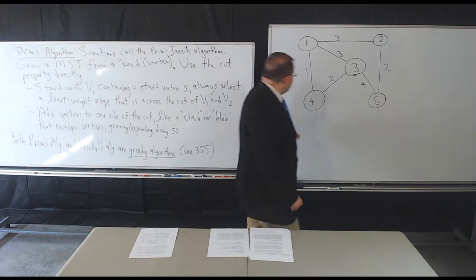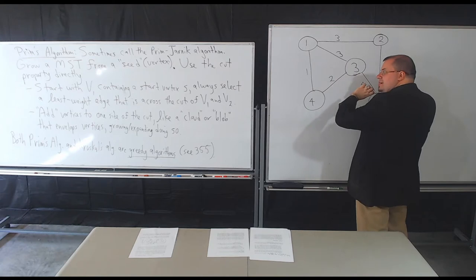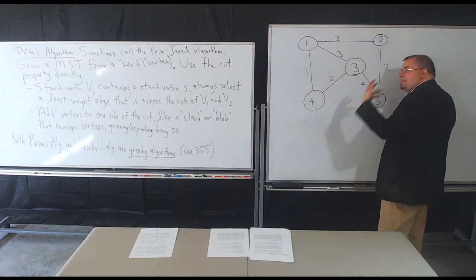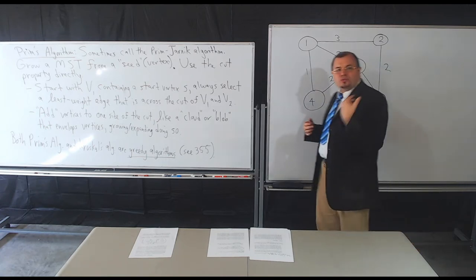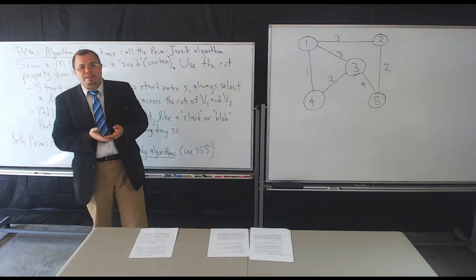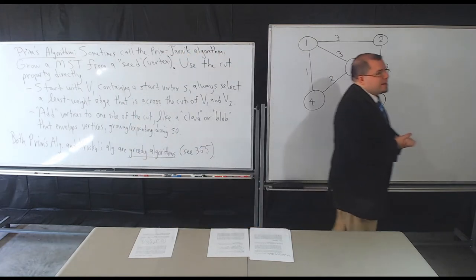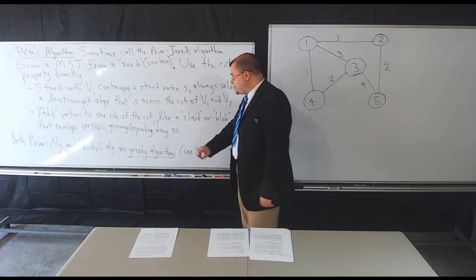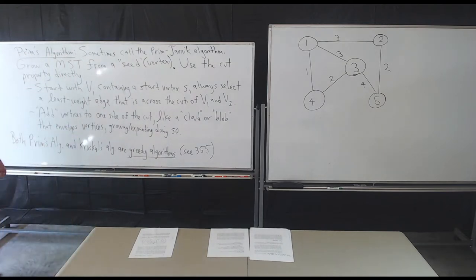This strategy is a locally optimal strategy. It looks at itself and says 'this is what I have so far' and always selects the cheapest edge at that time. This is an example of a greedy algorithm — a greedy algorithm makes locally optimal choices in the hopes of getting the global optimal solution. Prim's and Kruskal's algorithms are kind of the classic examples of these kinds of algorithms; you'll see more in CS 355.